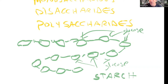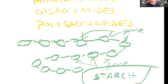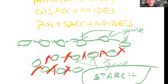Starch is also important in human physiology because it's how we get a lot of our carbohydrates in our diet. A plant — like a potato or wheat plant — stores away energy for later as starch. We eat the plant, and enzymes break apart the bonds between glucoses, freeing up glucose for cellular respiration. Starch is a classic polysaccharide.